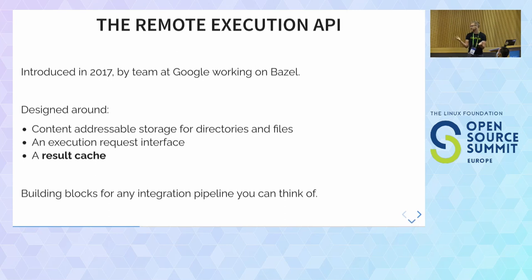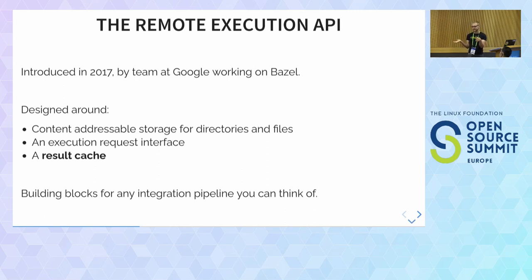The key ideas include content-addressable storage — something we've had for a long time. Git is a great example where each commit is addressed by its content hash. We can apply that to builds too: if you hash a binary you can say this binary is the same as another because the hash matches. Better still, you can hash the source code and build instructions, and as long as you've controlled all the inputs, you can look at them and say we don't need to build again.